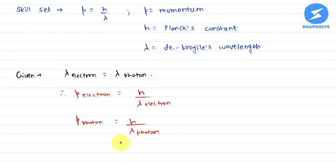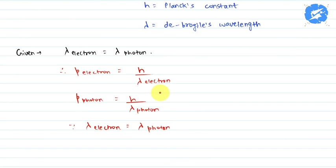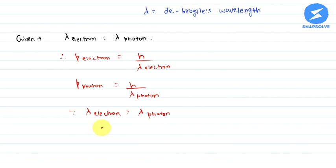Now, since lambda of electron is equal to lambda of photon, both the denominator will be the same along with the numerator being the same. So the whole fraction will be the same.